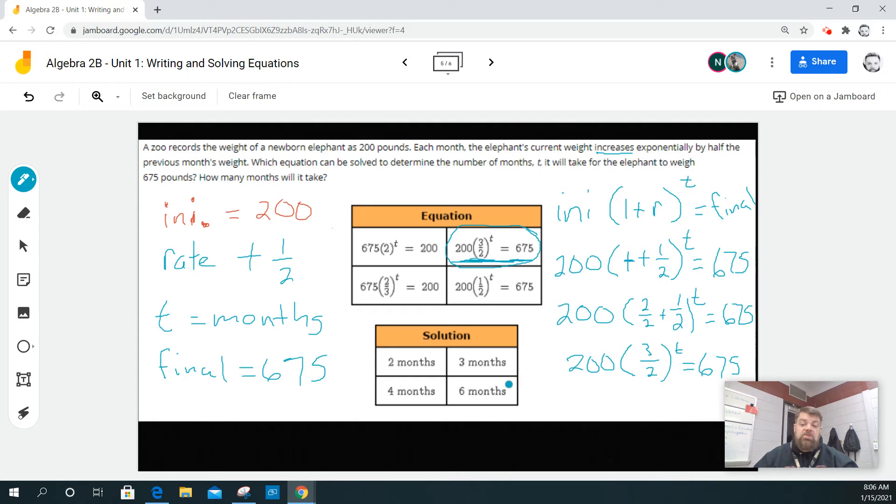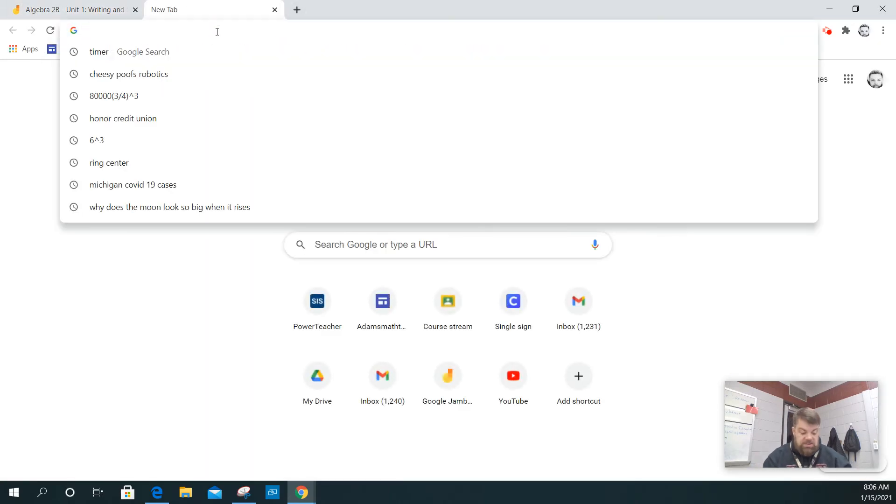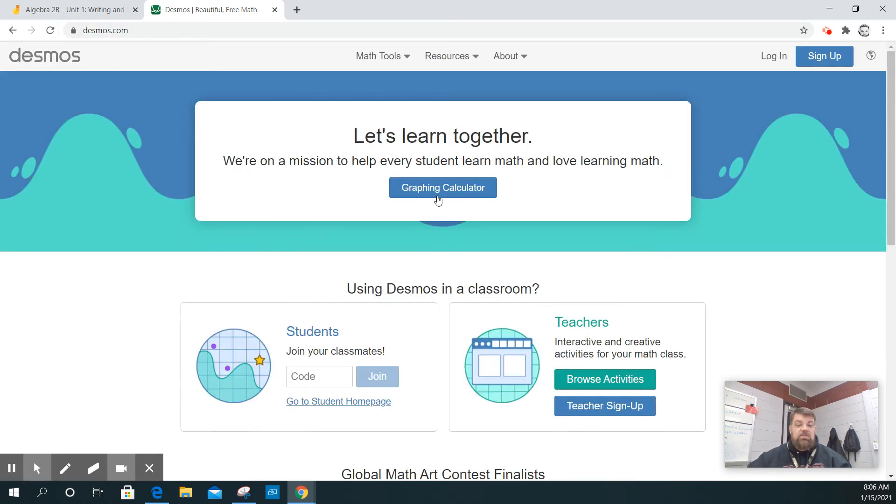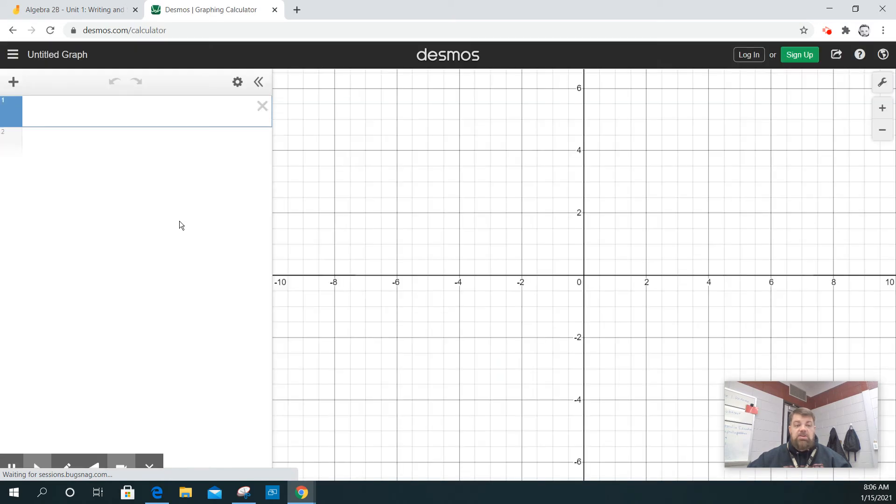Well, you can solve this using logs, but we're not going to use logs. We're just going to graph this real quick. So I'm going to go to Desmos, and I'm going to graph the left-hand side of the equal sign, and I'm going to graph the right-hand side of the equal sign and see where they match up.